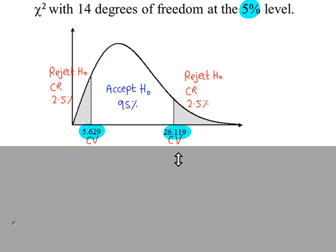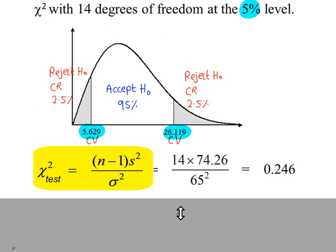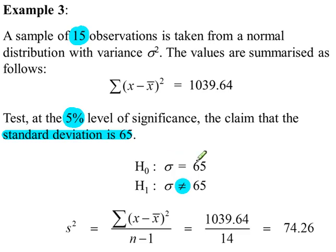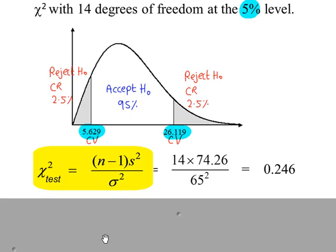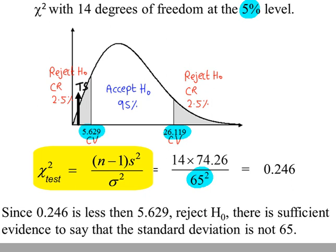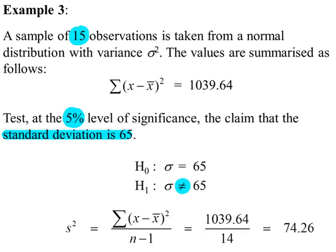We calculate our test statistic. Remember, this value is a variance, and we had a standard deviation of 65, so we take the value from H0 and square it to get the variance. Our test value is 0.246, which is less than 5.629, so we're going to reject H0. There is sufficient evidence to say that the standard deviation is not 65.